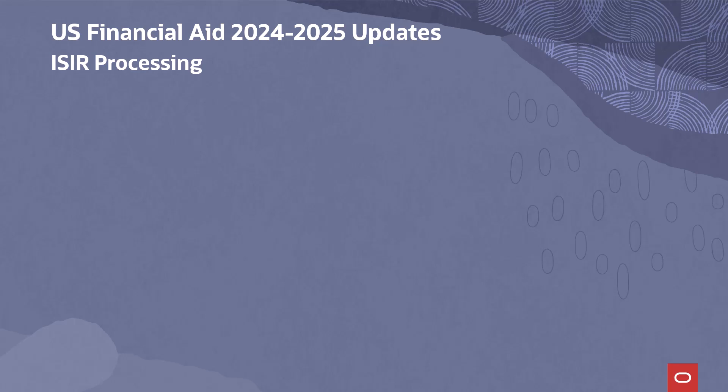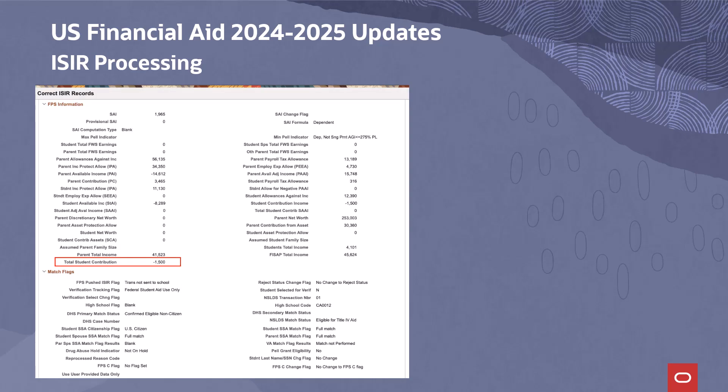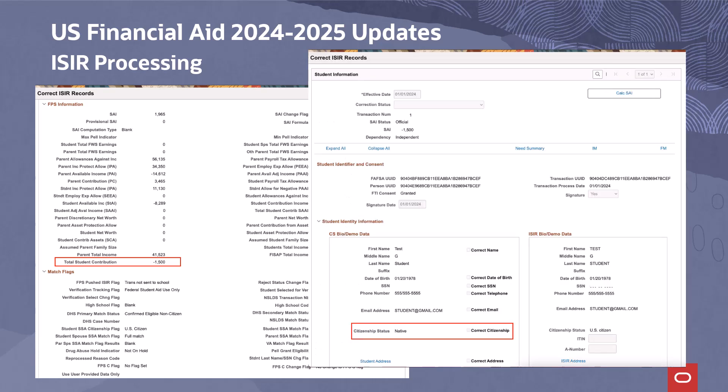We have released updates for ISA related to FAFSA simplification. These updates were released via several PRPs and are re-delivered in PumImage 32. Highlights include a new Total Student Contribution field added to the correct ISA record component, reinstating the CS Citizenship Status field to the correct ISA record component, updates to the ISA SAR XREF table, and resolving several issues reported with the ISA load.